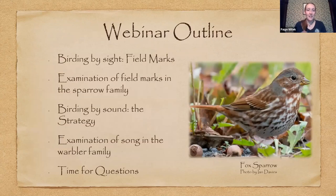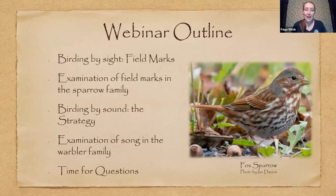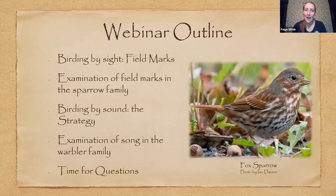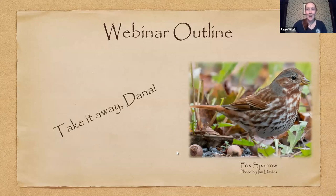Here's our outline for today: Dana will go over birding by sight using field marks, then use the sparrow family as an example. Next we'll start birding by sound — Zeb will cover strategy for getting started, and Ethan will talk about the warbler family and another way to look at songs and calls. At the end we'll have time for questions. We've got a fun presentation planned — I hope you enjoy it. Now I'll hand it over to Dana.